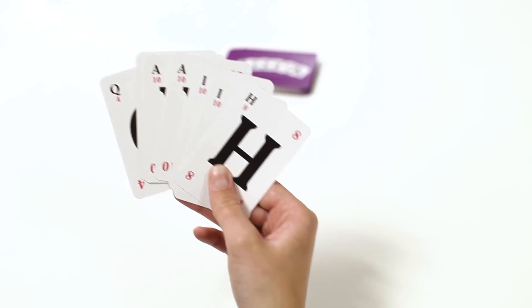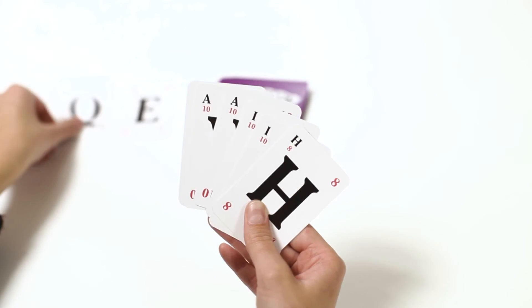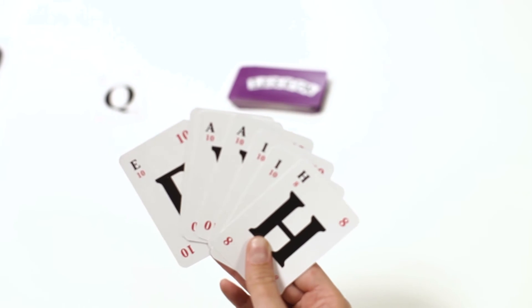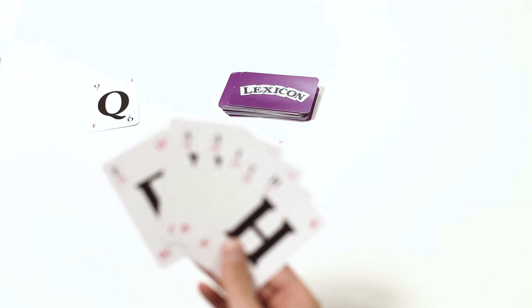If a player cannot form a word then they must exchange one of their cards for either the face up cards or the top card of the draw pile. They must discard before taking and this forms their turn.